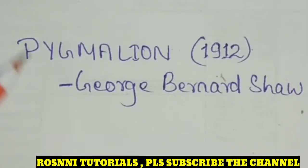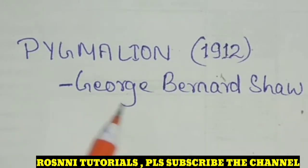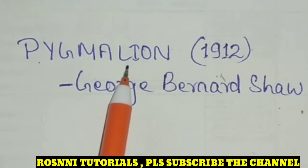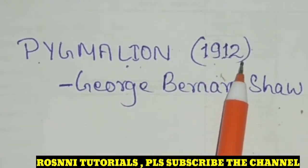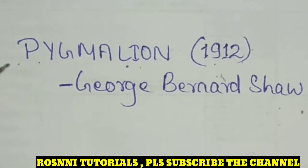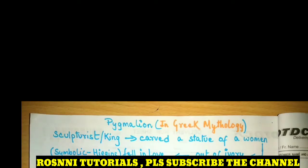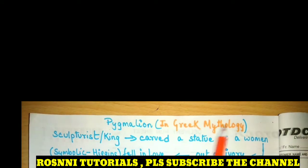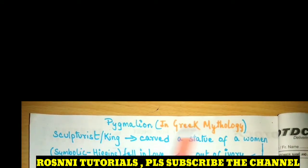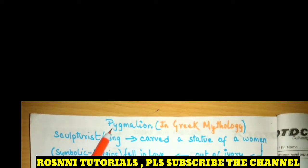Hello friends, today I have taken a very important play by George Bernard Shaw and its name is Pygmalion. This play was published in the year 1912. Now, what is the meaning of Pygmalion? What is the significance of the title? Let us find out.